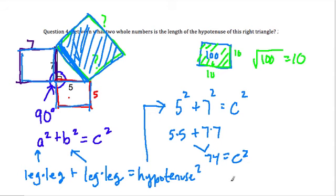Now, in this problem, we take the square root of 74. And the question asks, between what two whole numbers is the length of the hypotenuse of this right triangle? Well, notice that 8 squared, which is 8 times 8, that's 64. We want to get 74, right? This is asking what number squared gives 74. So then try the next whole number.